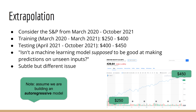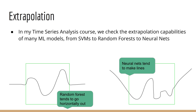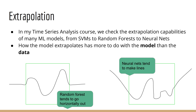In my time series analysis course, we analyze how different models extrapolate — from support vector machines to random forests to neural networks. What we found was that in all cases, these models fail to extrapolate even for simple patterns, and they all extrapolate in different ways. For example, the random forest tends to extrapolate by going horizontally outward, due to the nature of decision trees. Whereas the neural network tends to extrapolate linearly. This is not a matter of philosophy — we have seen firsthand what they actually do. How the model extrapolates is more based on the form of the model than the patterns in the dataset.